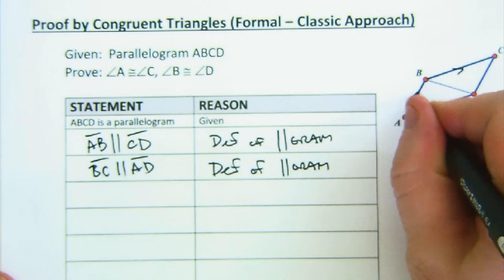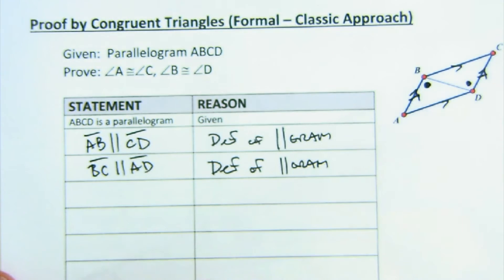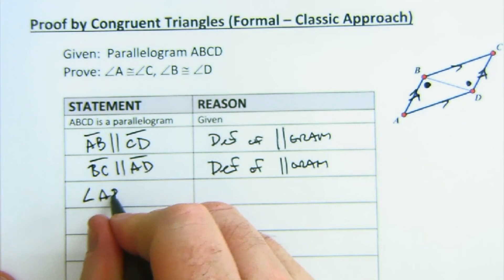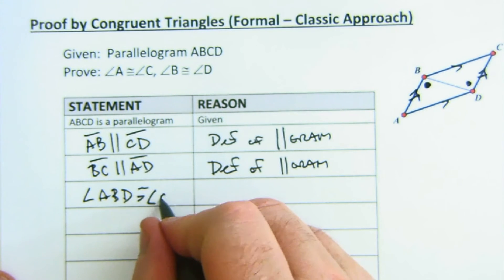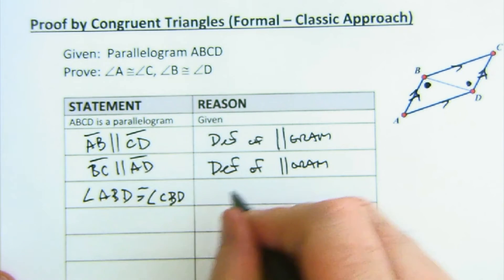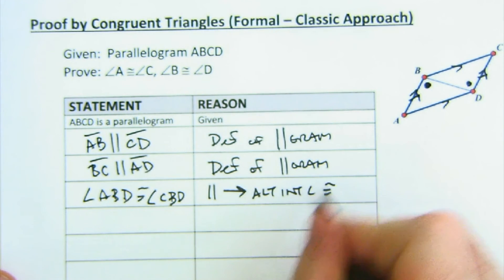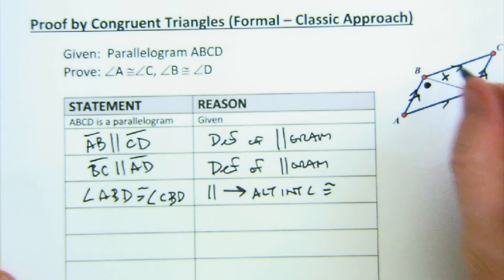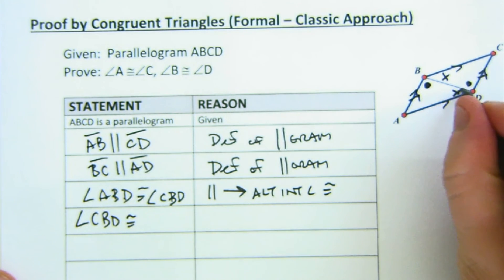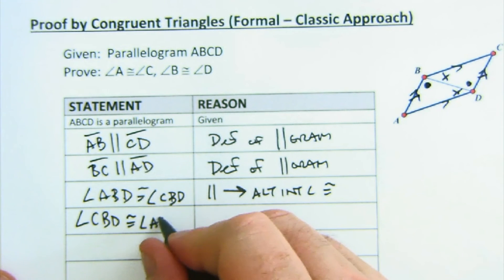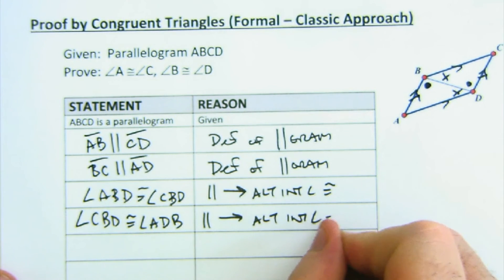And then the next thing I'm going to talk about is this angle here would equal this one. So angle ABD is congruent to angle CDB. Parallel lines give us alternate interior angles that are congruent. I could also state that this angle, angle CBD, is congruent to this angle, angle ADB, for the same reason. Alternate interior angles are congruent.